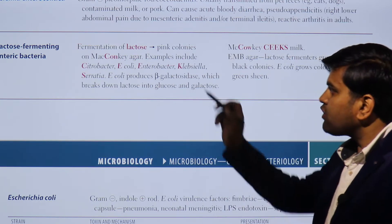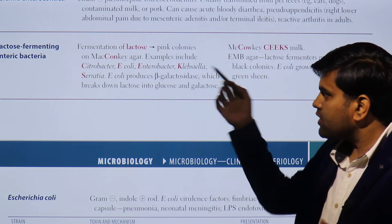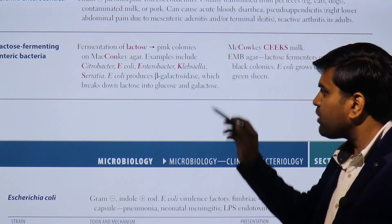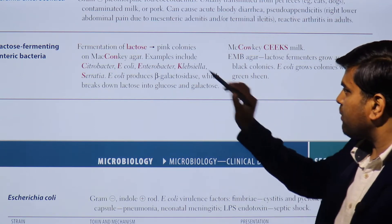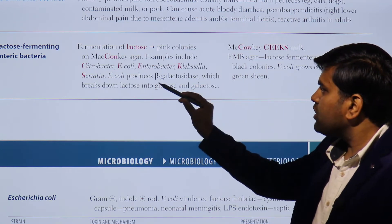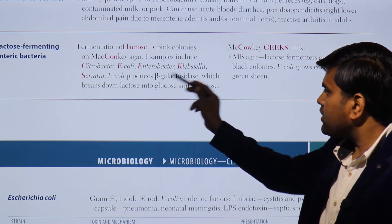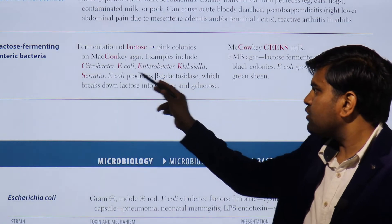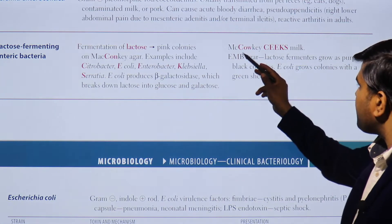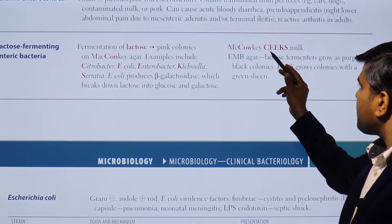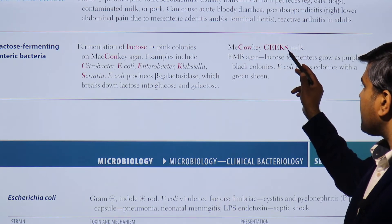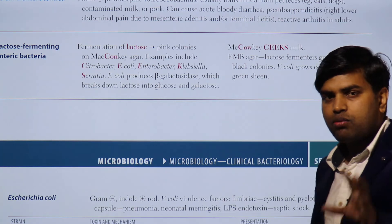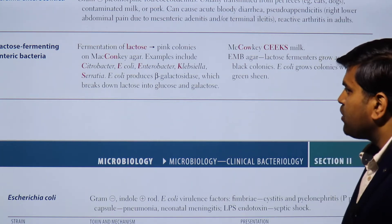For medical importance: lactose fermenting enteric bacteria ferment lactose and appear pink in color on MacConkey agar. Examples include Citrobacter, Enterobacter, E. coli, Klebsiella, and Serratia. You can remember these by the formula CHICK: Citrobacter, Enterobacter, E. coli, Klebsiella, and Serratia — these organisms appear pink and ferment lactose.